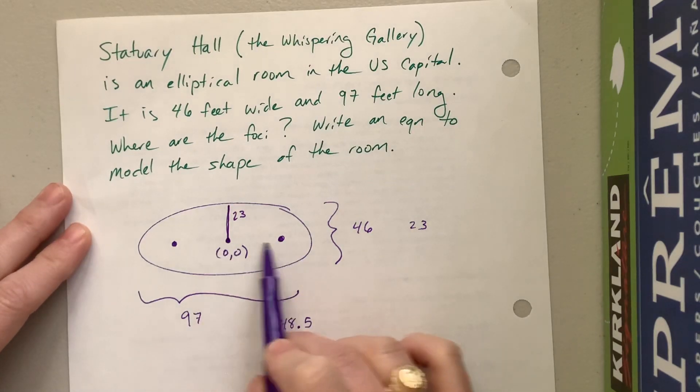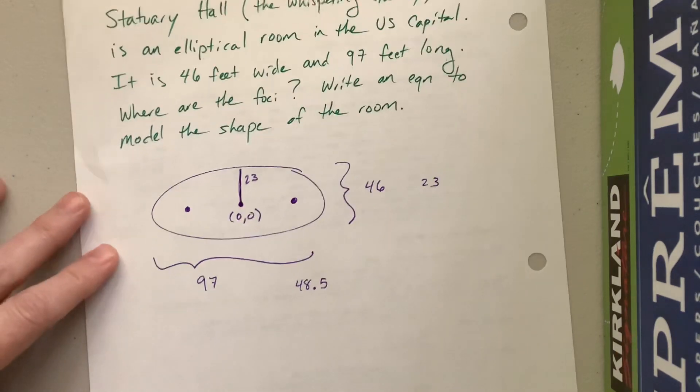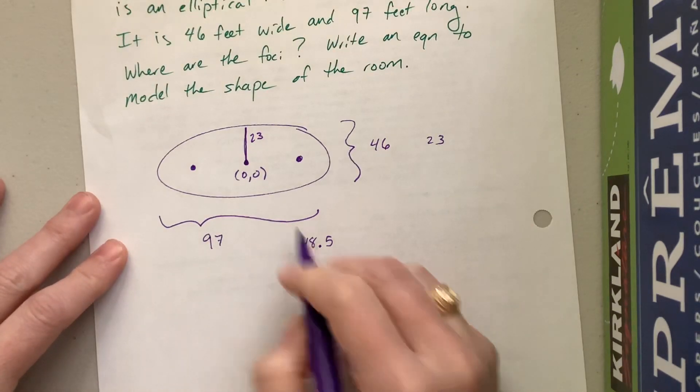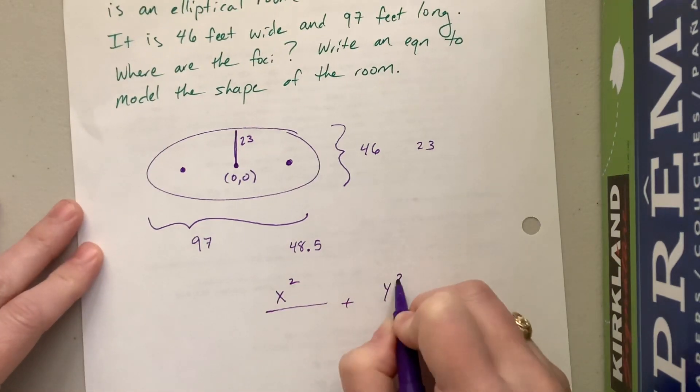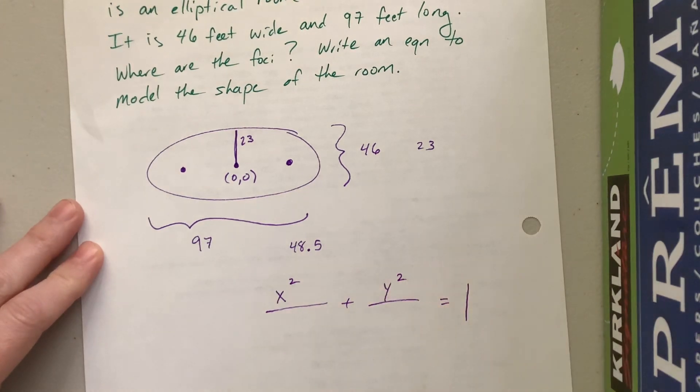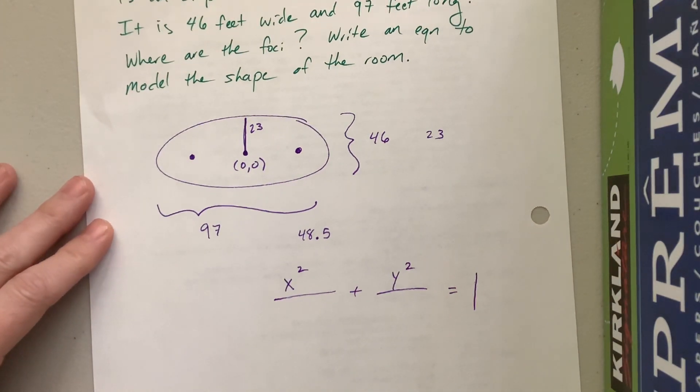This distance here is this 48.5, but then we also need to figure out where is the foci. Okay, one thing at a time. The equation, we're centered at the origin, so it's x squared over something plus y squared over something equals one, is our basic format for an ellipse.